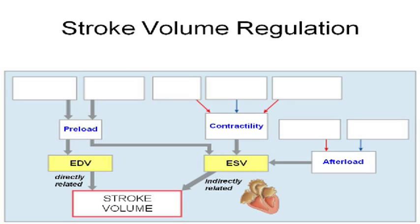The three things that work together to alter these two things are preload, contractility, and afterload. These three things basically influence the EDV and the ESV — how much blood you put in there and how much blood is left. Preload, contractility, and afterload.